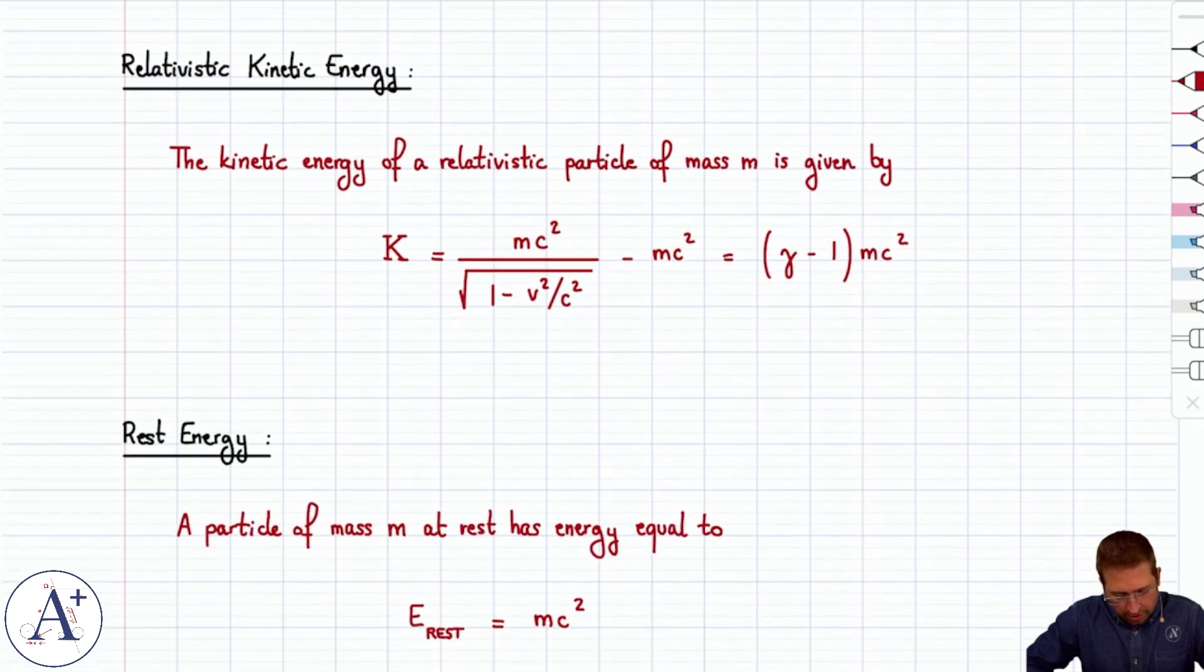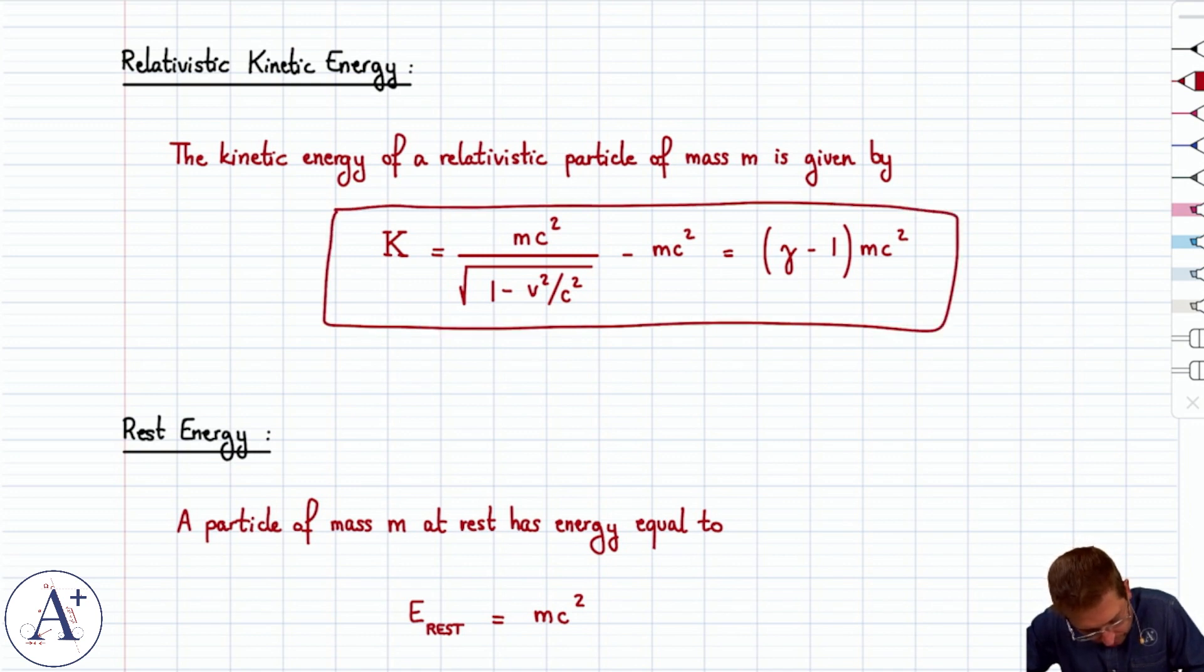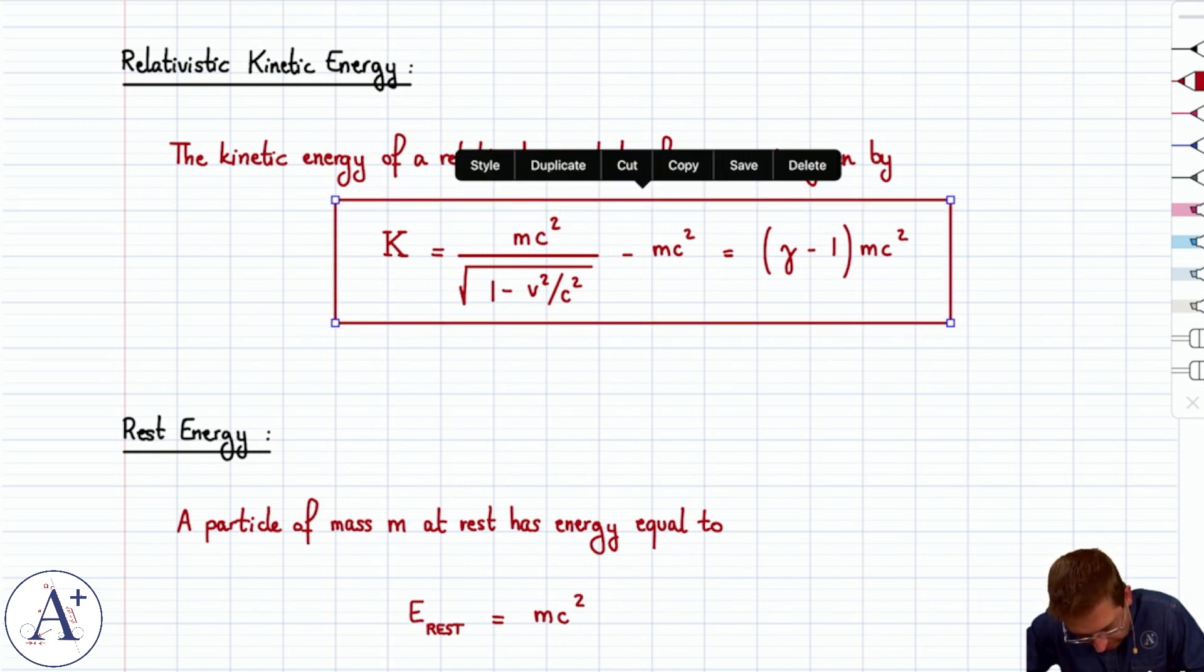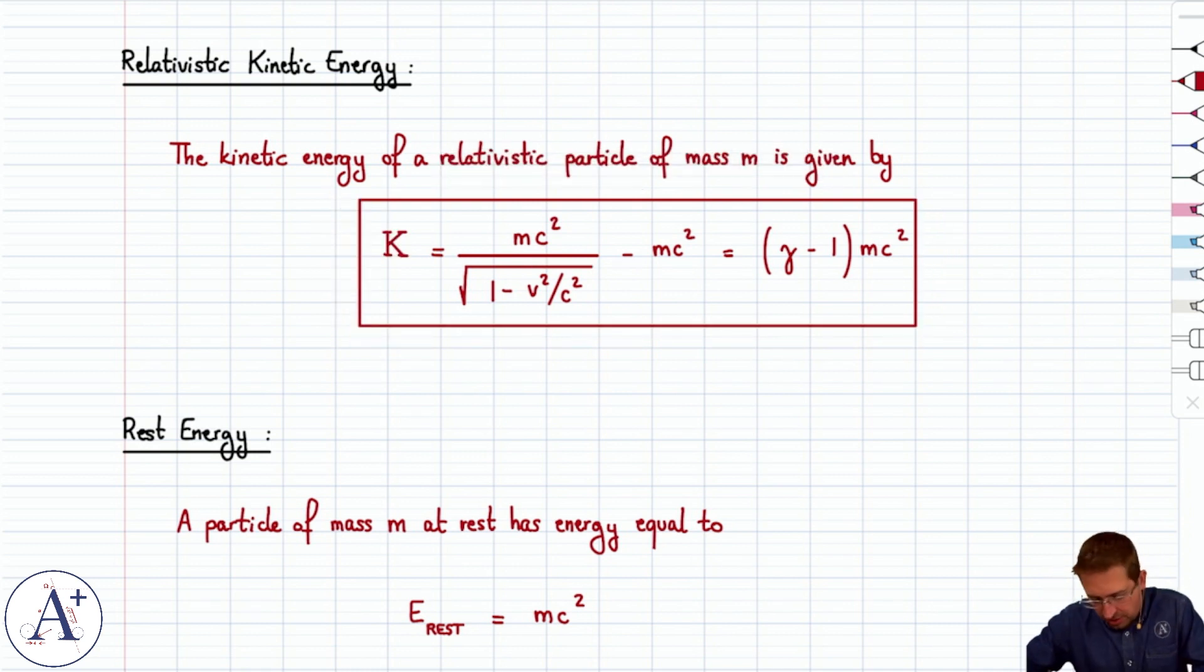Moving on to relativistic kinetic energy. Kinetic energy k is going to be given by this formula here, which once you simplify it as much as you can, comes out to be equal to gamma minus 1 times mc squared.